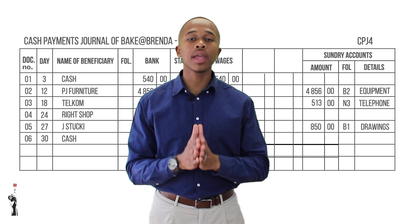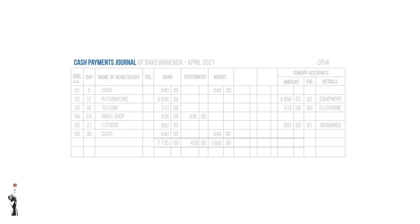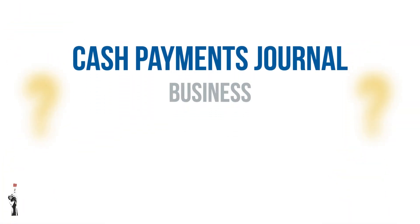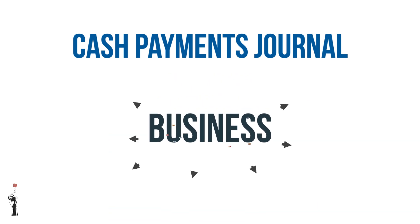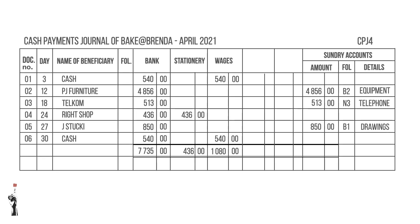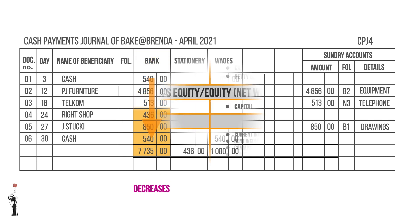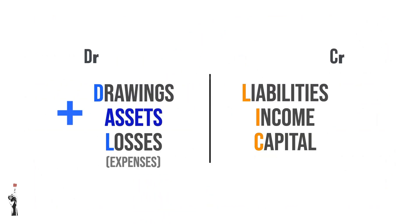Now let's post the accounts from the cash payments journal to the general ledger. The cash payments journal tells us that the business pays or spends money — that is money leaving the business. The main column in the CPJ is bank. The money in the bank decreases when a transaction is recorded in the CPJ. As you already know, bank is an asset — it therefore increases on the debit side and decreases on the credit side.